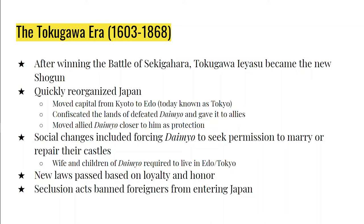Ieyasu was not a popular ruler. He only allowed lords to marry or repair their castles with his permission. He required the wives and children of other Daimyo to live at his castle in Tokyo, and the Daimyo themselves were required to live there every other year. New laws were passed to control the courts, temples, shrines, and lords — many of these laws based on loyalty and order.